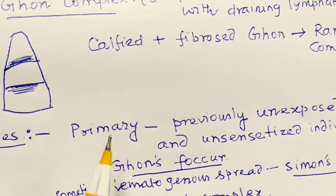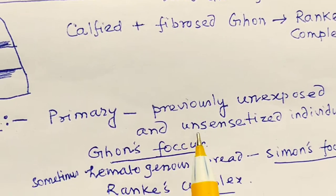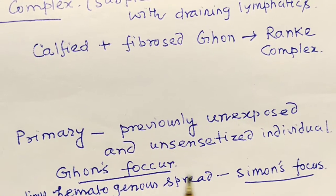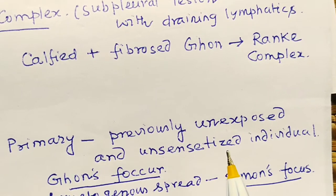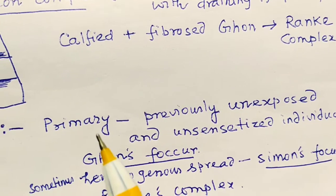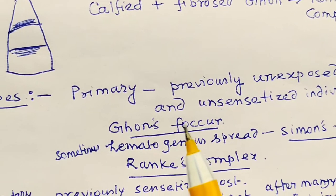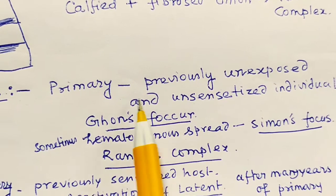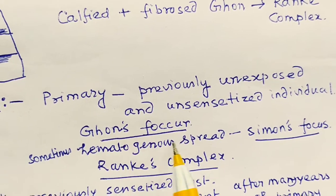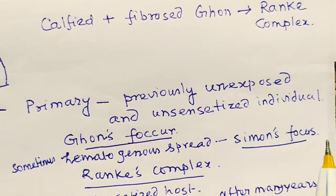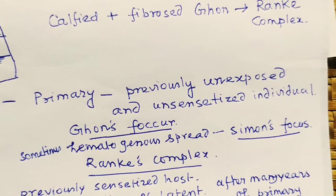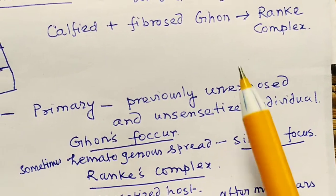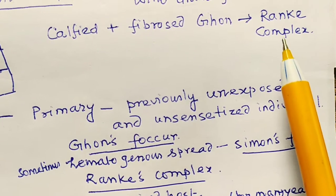The first type is primary tuberculosis, which occurs in a previously unexposed and unsensitized individual. You can see the Ghon focus. Sometimes from the Ghon focus it spreads hematogenously, and this hematogenous spread is called Simon's focus. The fibrosed and calcified Ghon complex is Ranke's complex.